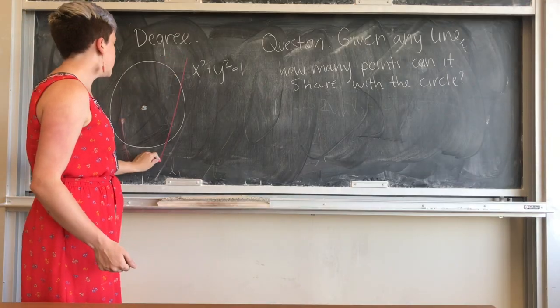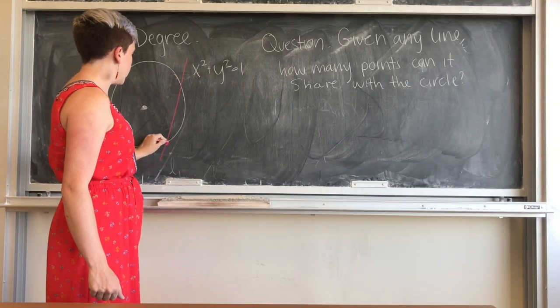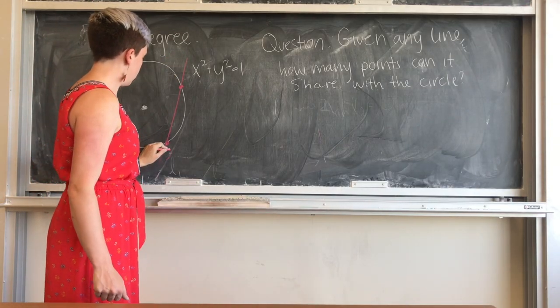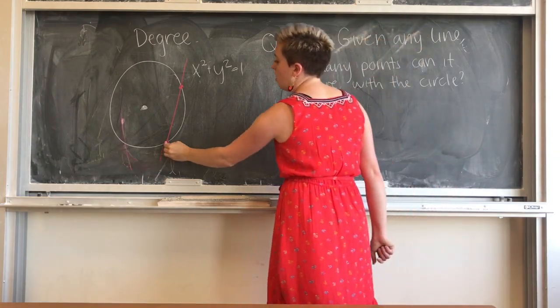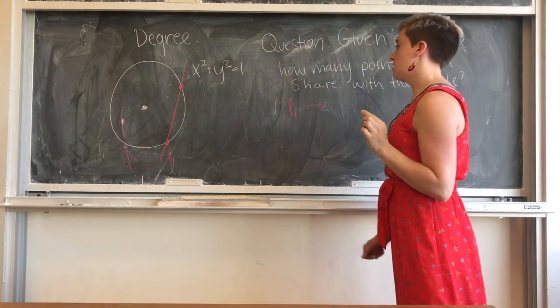The one thing that could happen is the line meets the circle in two points. We see that L1 shares two points with the circle.